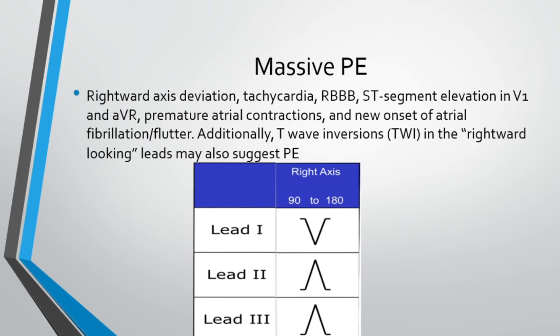As noted earlier, giving fluid boluses to a massive PE patient can cause a drop in blood pressure. To treat this patient, manage your ABCs and consider a vasopressor such as push-dose epinephrine. This enhances right ventricular function via positive inotropic effects, increasing the strength of muscular contraction and increasing MAP through peripheral vasoconstriction without significantly increasing pulmonary vascular resistance.